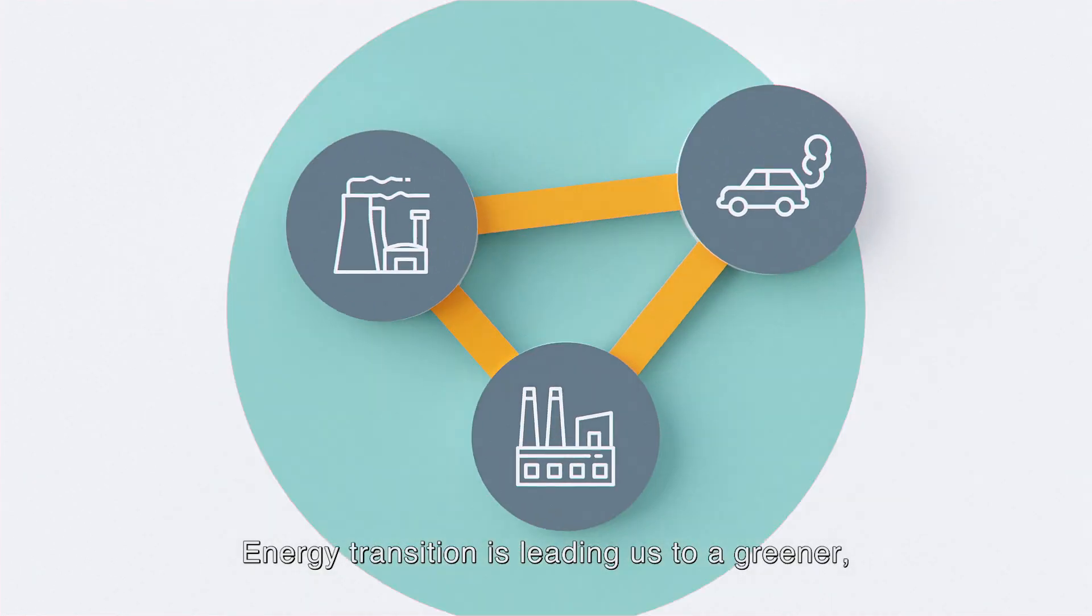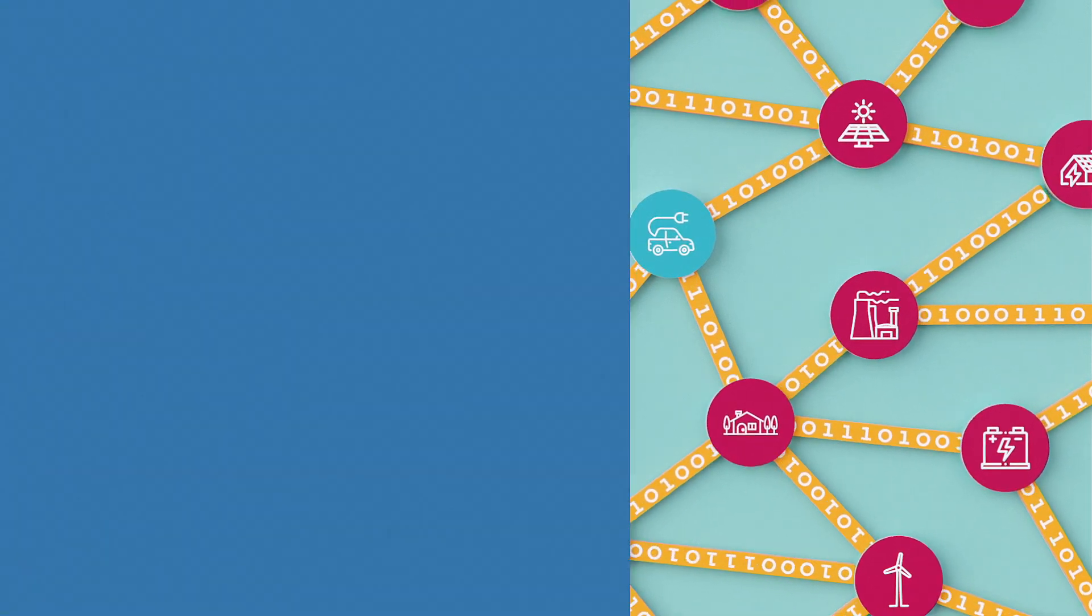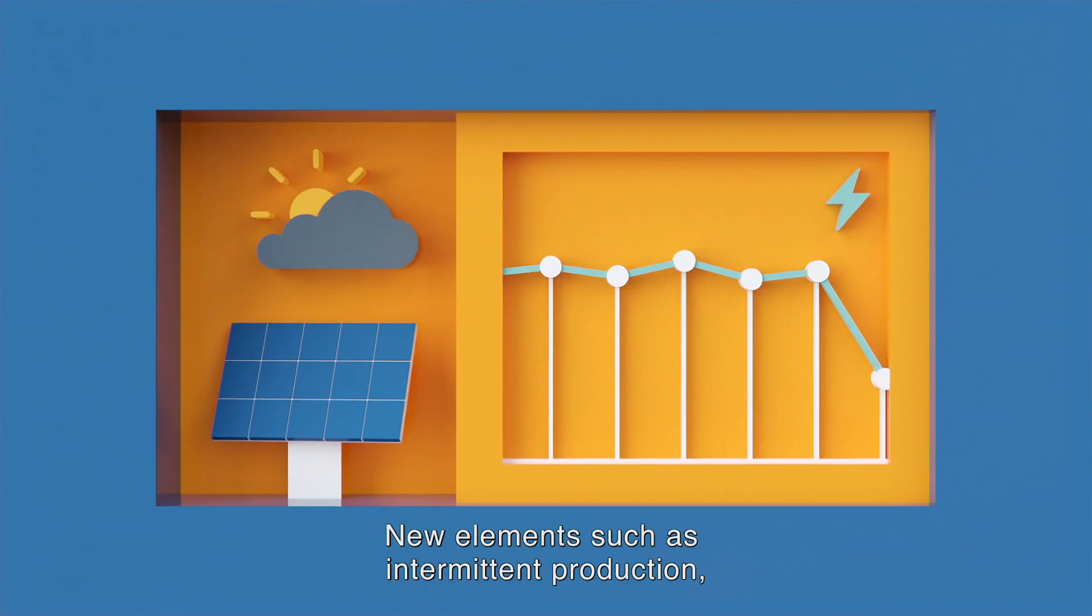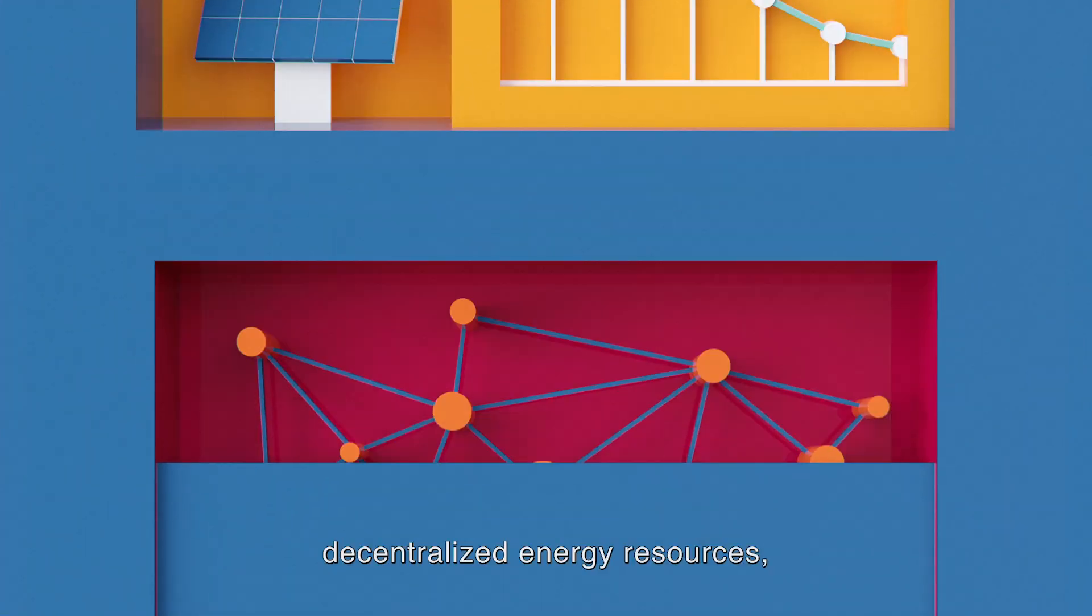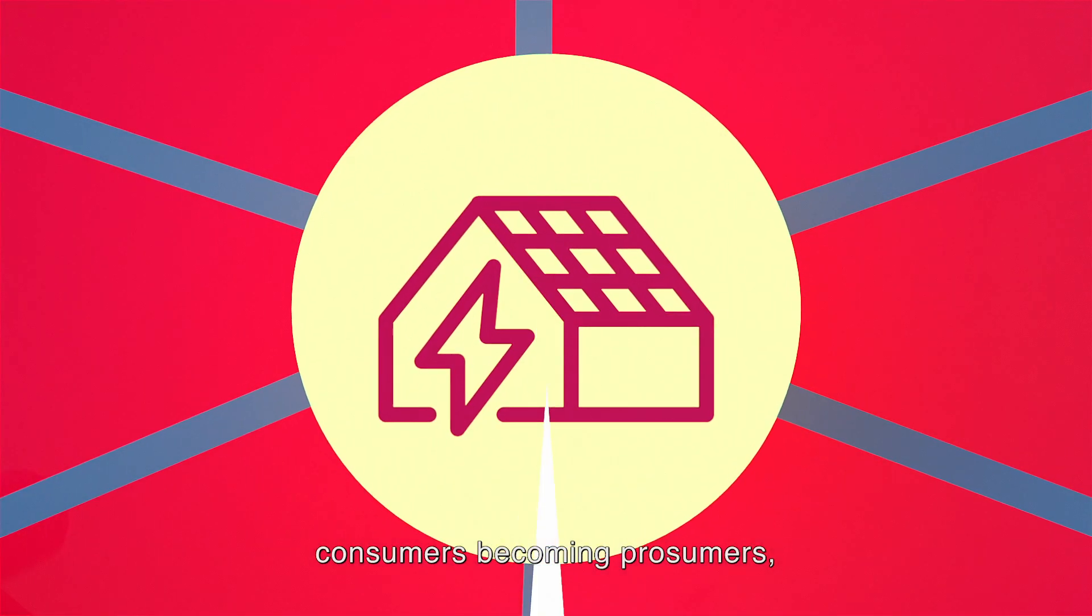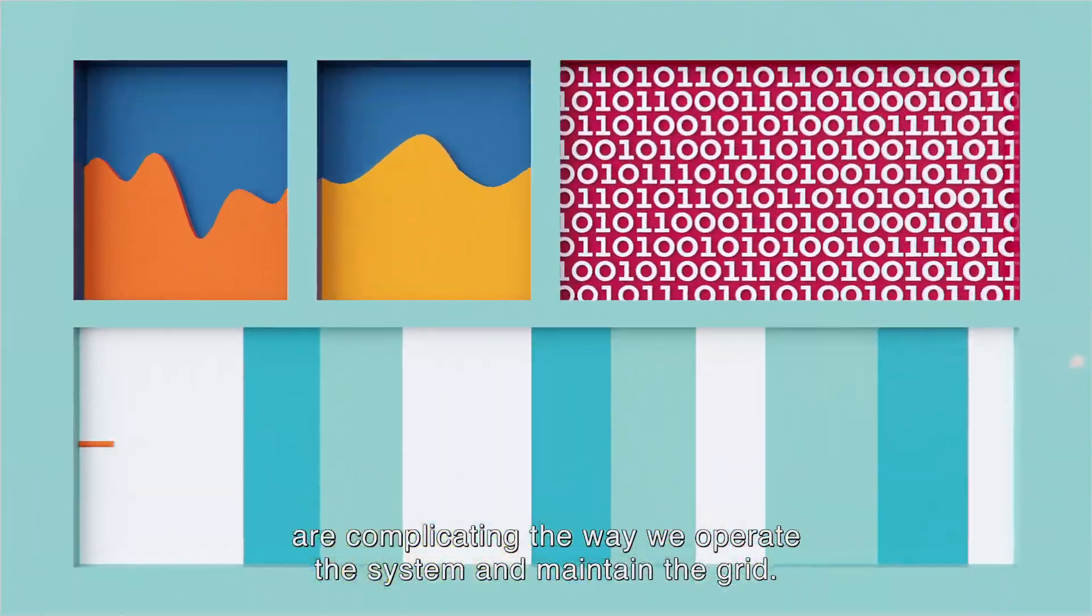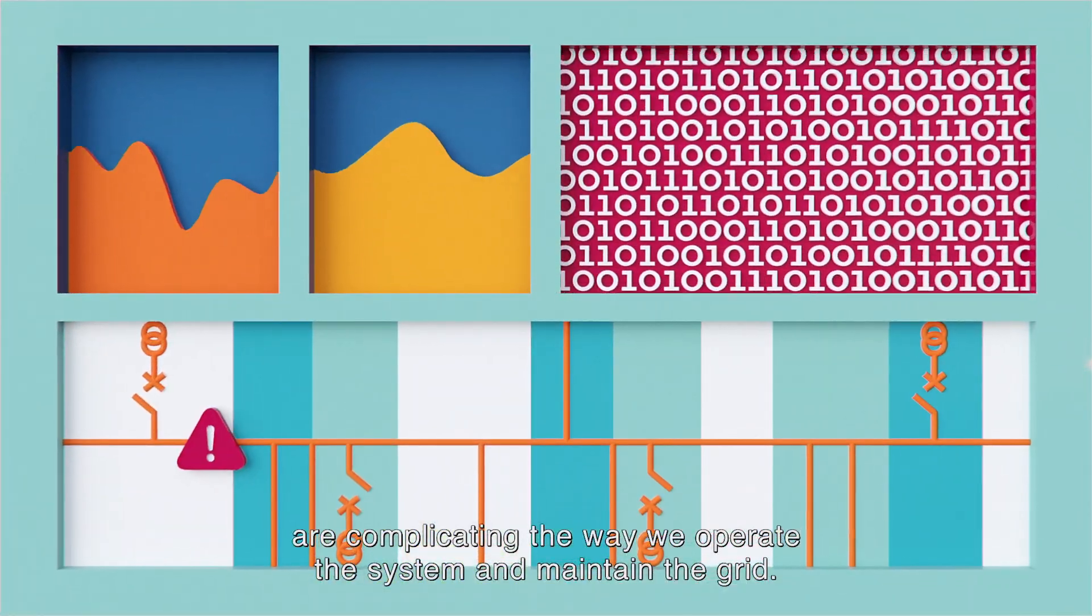Energy transition is leading us to a greener but also a more complex energy landscape. New elements such as intermittent production, decentralised energy resources, consumers becoming prosumers, combined with a large amount of available data are complicating the way we operate the system and maintain the grid.